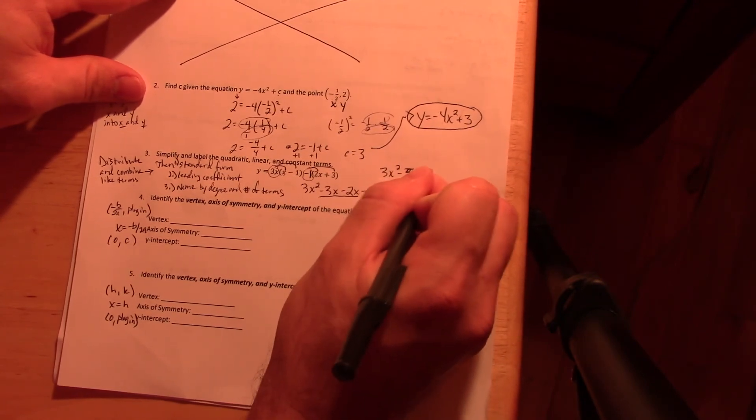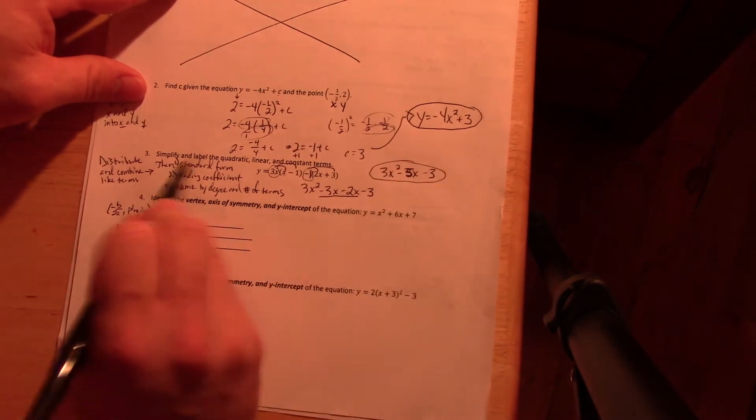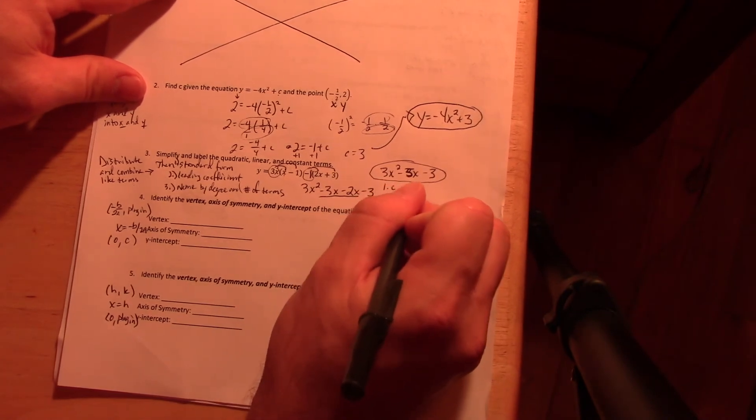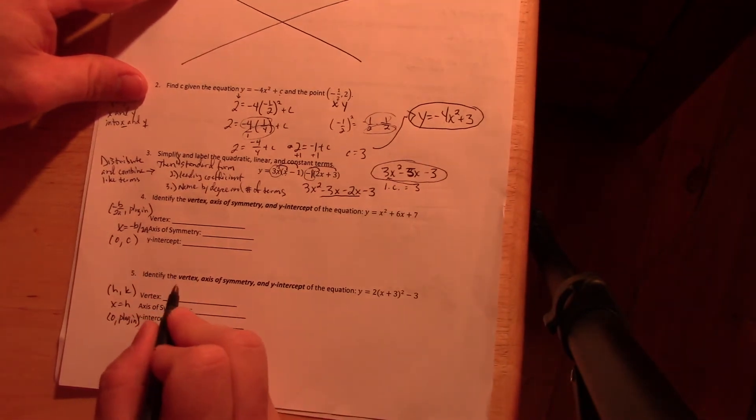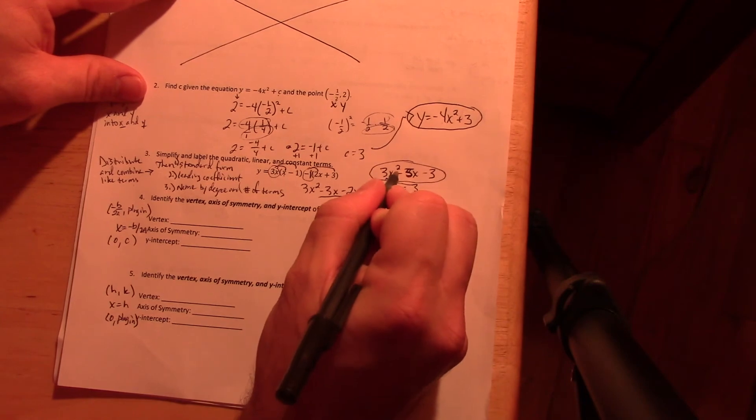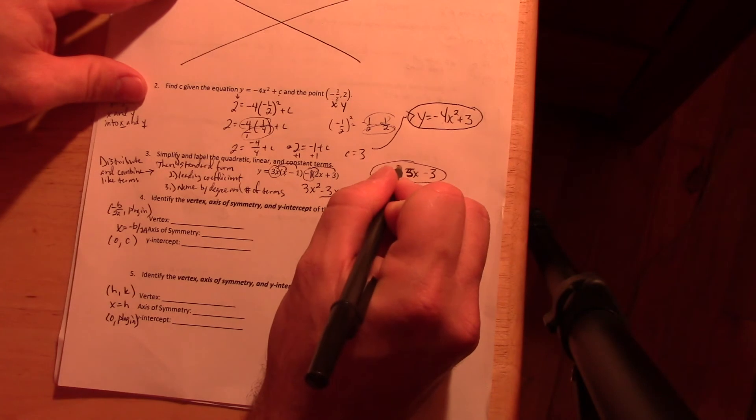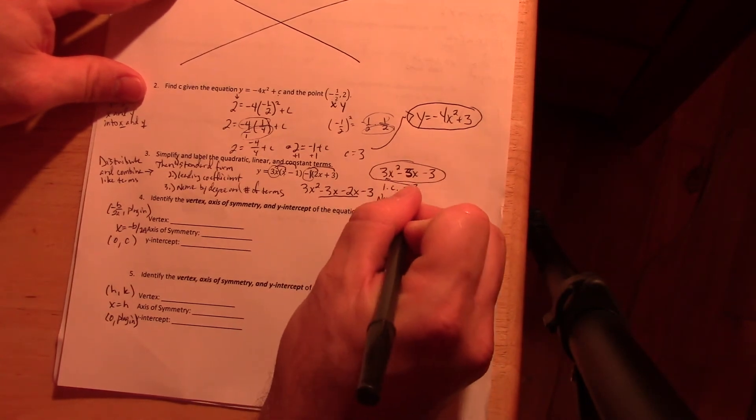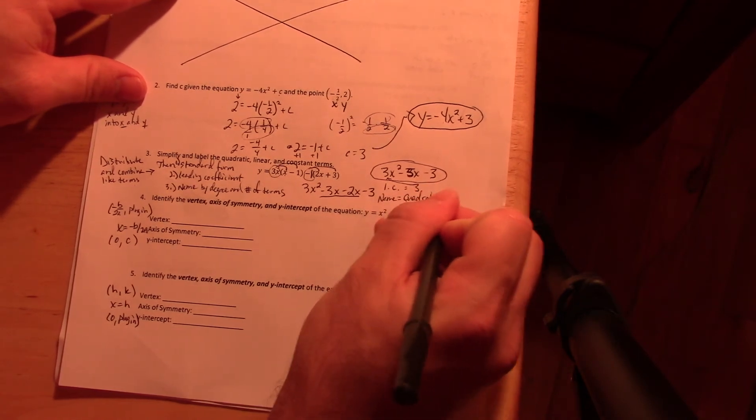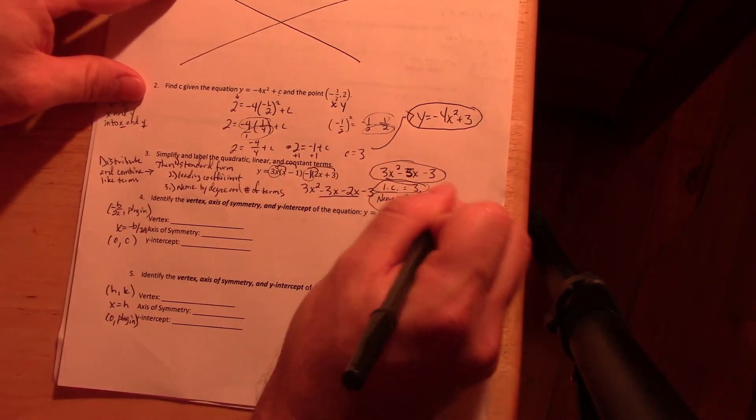Now it's in standard form like this. That would be the first part. It's not asking you to do it here, but it will on the test. The leading coefficient is 3, because it's the number in front of the highest exponent. And then to name it by number of terms and degree: well, I'm going to write those up on the next review, but to the second degree is quadratic, and three terms is a trinomial. So this is a quadratic trinomial. That would be your three parts that you're going to need to do on the test.